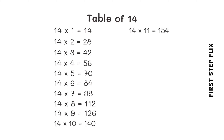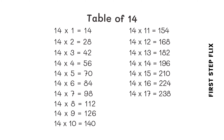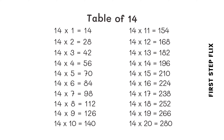14 elevens are 154. 14 twelves are 168. 14 thirteens are 182. 14 fourteens are 196. 14 fifteens are 210. 14 sixteens are 224. 14 seventeens are 238. 14 eighteens are 252. 14 nineteens are 266. 14 twenties are 280.